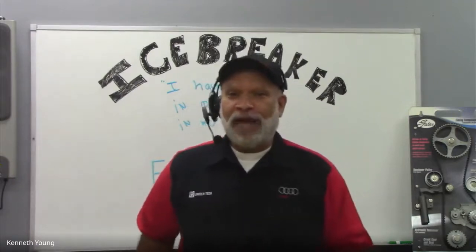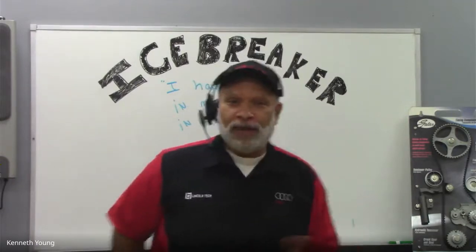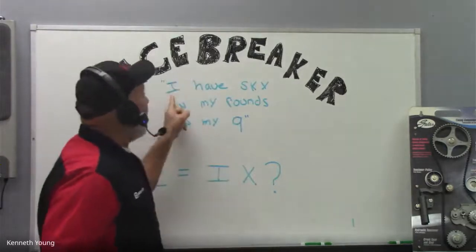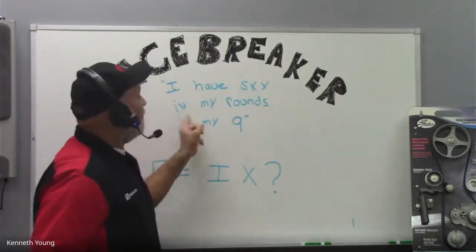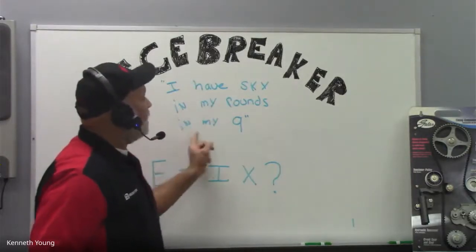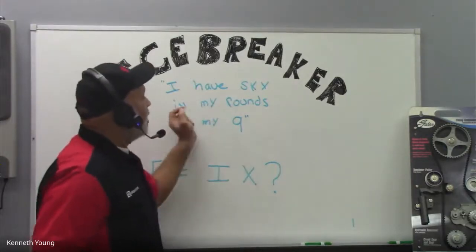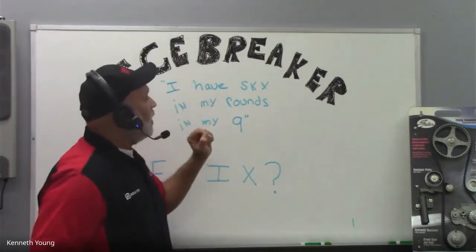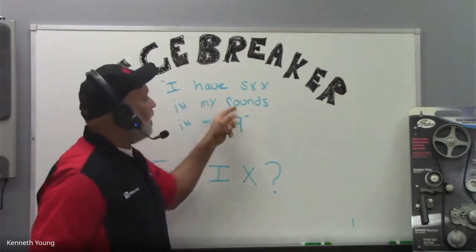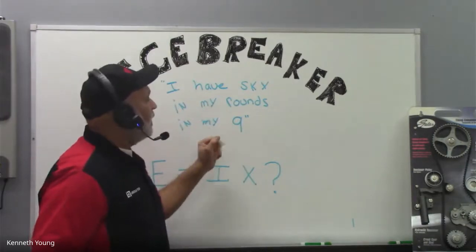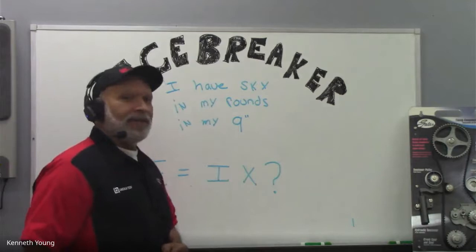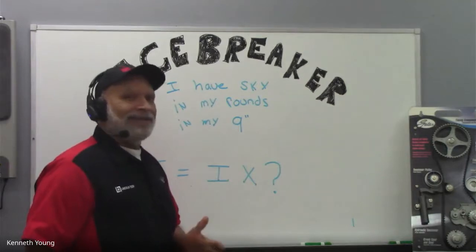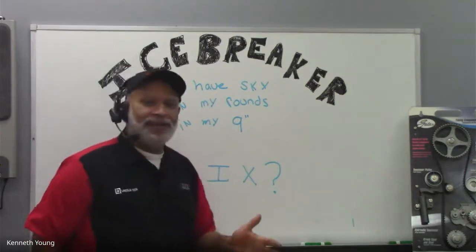You ask what the icebreaker behind me is? Well, let's see. I have some sky in my rounds in my nine — so, I have some air in my tires in my '98. See? Isn't that interesting?